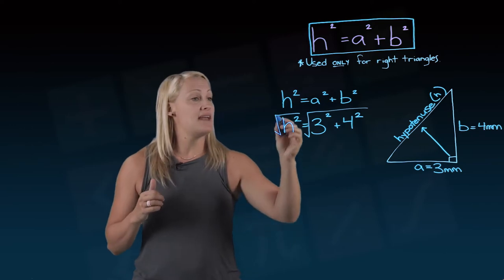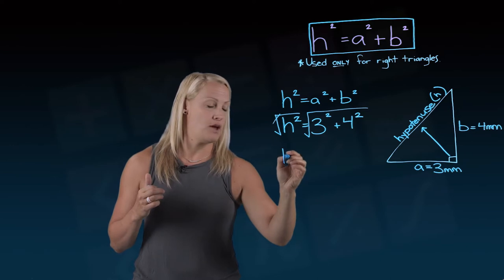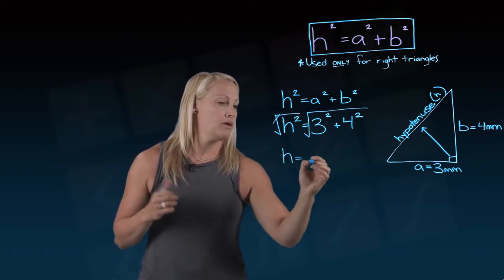So I'm going to take the square root of this. And the reason we did that is because the square root and the squared cancel each other out. So I'm left with just an h, just a hypotenuse by itself.